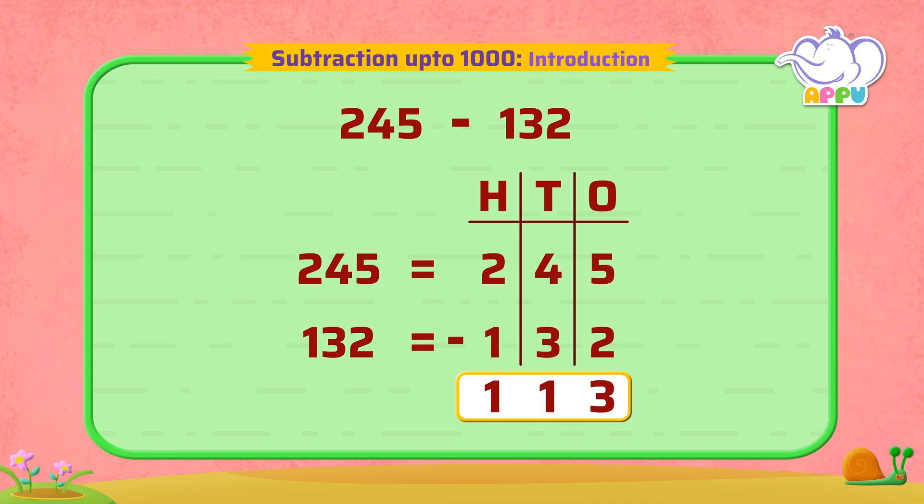So, 245 minus 132 is equal to 113. You're sensational!